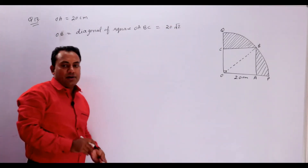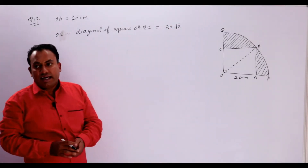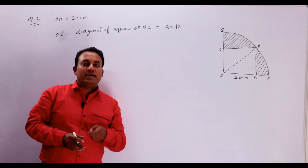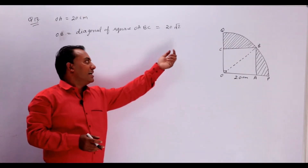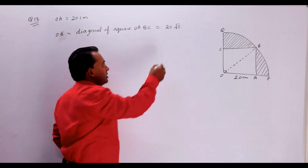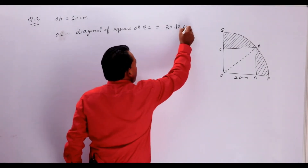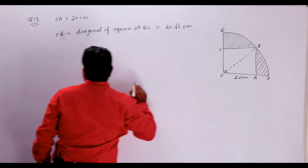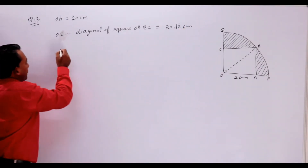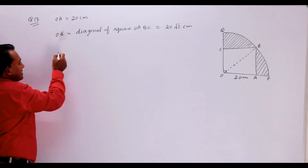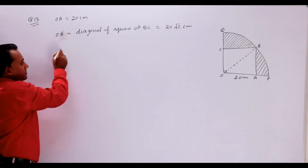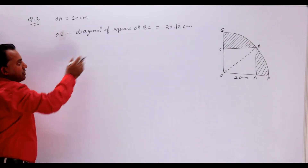Diagonal ka formula hota hai a root 2, yaani side into root 2. Yahan side aapke paas 20 hai, toh OB = 20 root 2 cm ho gaya. Theek hai? Ya aapko radius mil gayi — radius of quadrant kitni hui? 20 root 2.